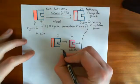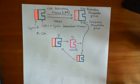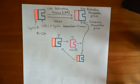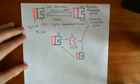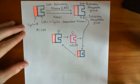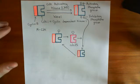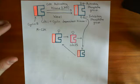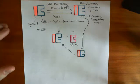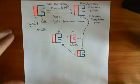So you get a positive feedback loop where producing a bit of active CDK means you produce a lot more, and cyclin B CDK1 complexes are going to go up very rapidly at the start of mitosis. Now let's actually discuss the process of mitosis and how this cyclin B CDK1 complex is so important in driving mitosis.